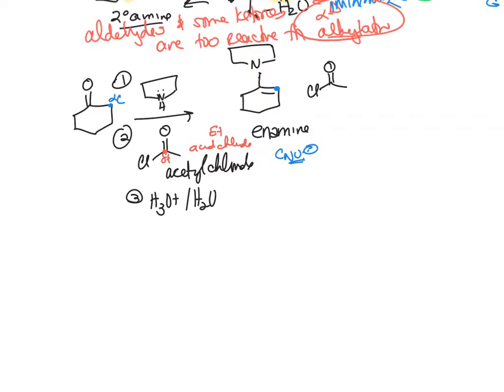So now these electrons on nitrogen come here, those electrons push, those electrons go up, come down. Cl is a leaving group. And now you formed a new bond. That's your alpha carbon.